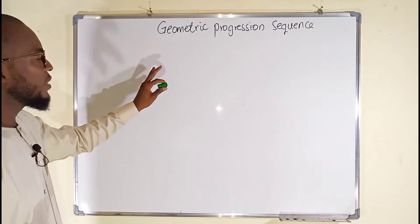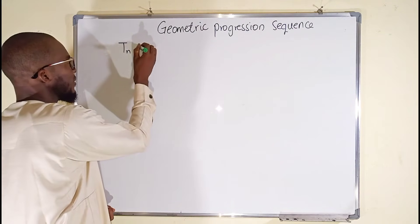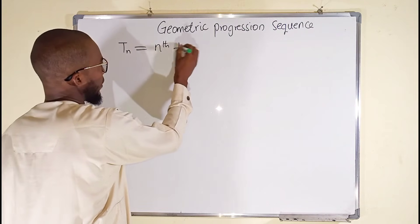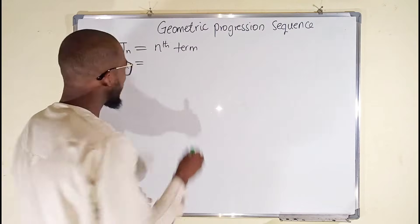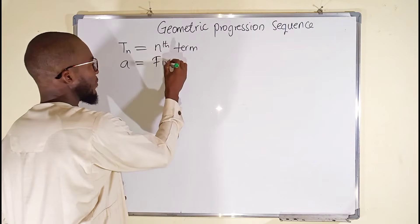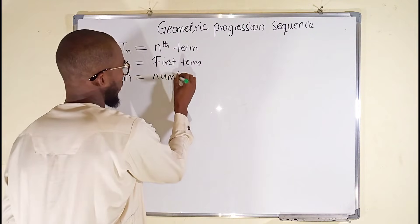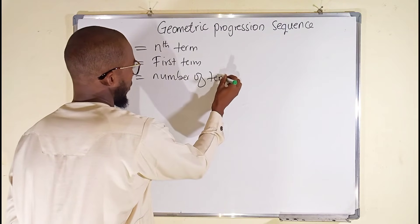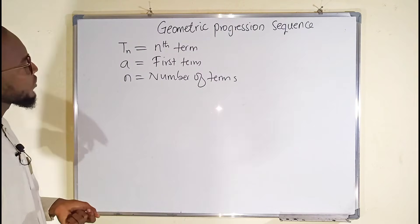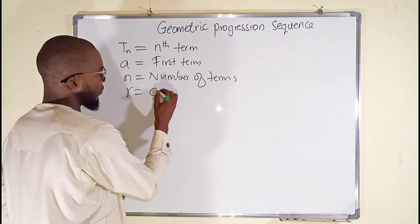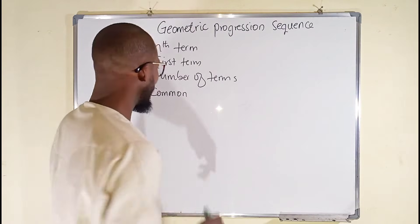Let me write some key terms here. Every term in the sequence can be denoted by Tn. Tn is nothing but the nth term. And a, as always, just like in arithmetic progression sequence, is the first term. n denotes the number of terms. And we have r, which is the common ratio. We use the common ratio to multiply a term just to get the subsequent term.